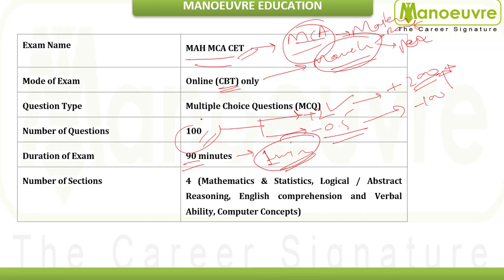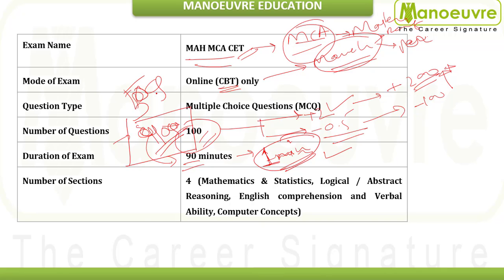Your strategy should be to attempt a minimum of 90 questions, giving each question about 1 minute — to read it, understand it, solve it, and mark the right option. This will only be possible if you strategize. If you don't strategize your topics and sections, you will not be able to attempt more than 50 questions. The syllabus is vast, so it is important to have a certain strategy when preparing for this exam.